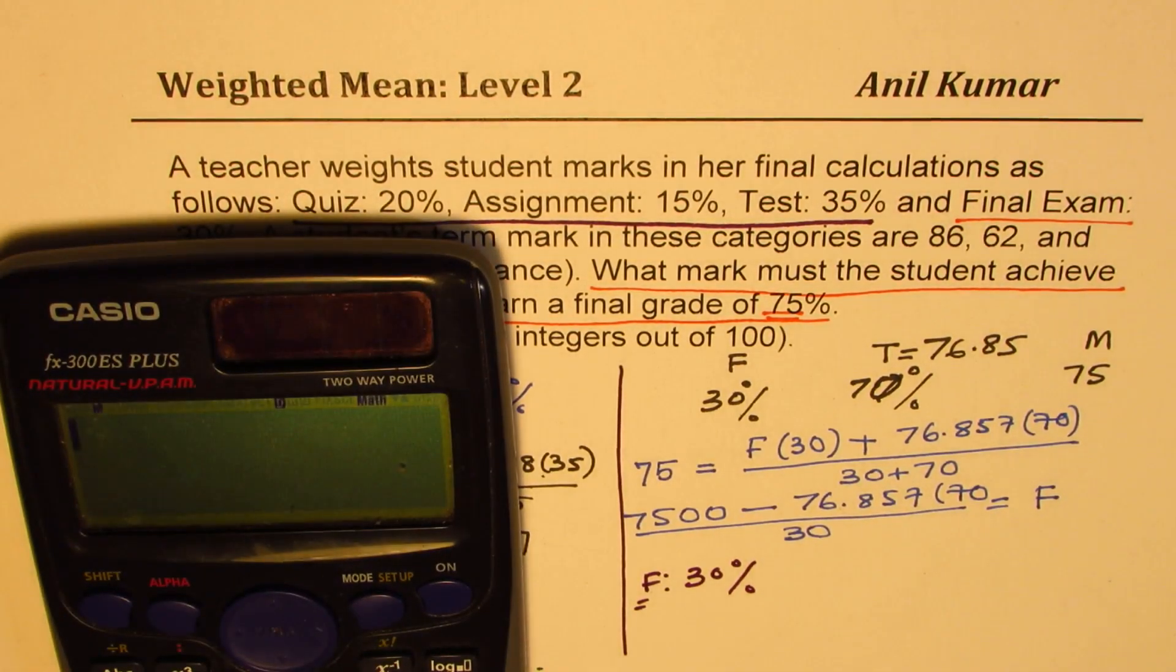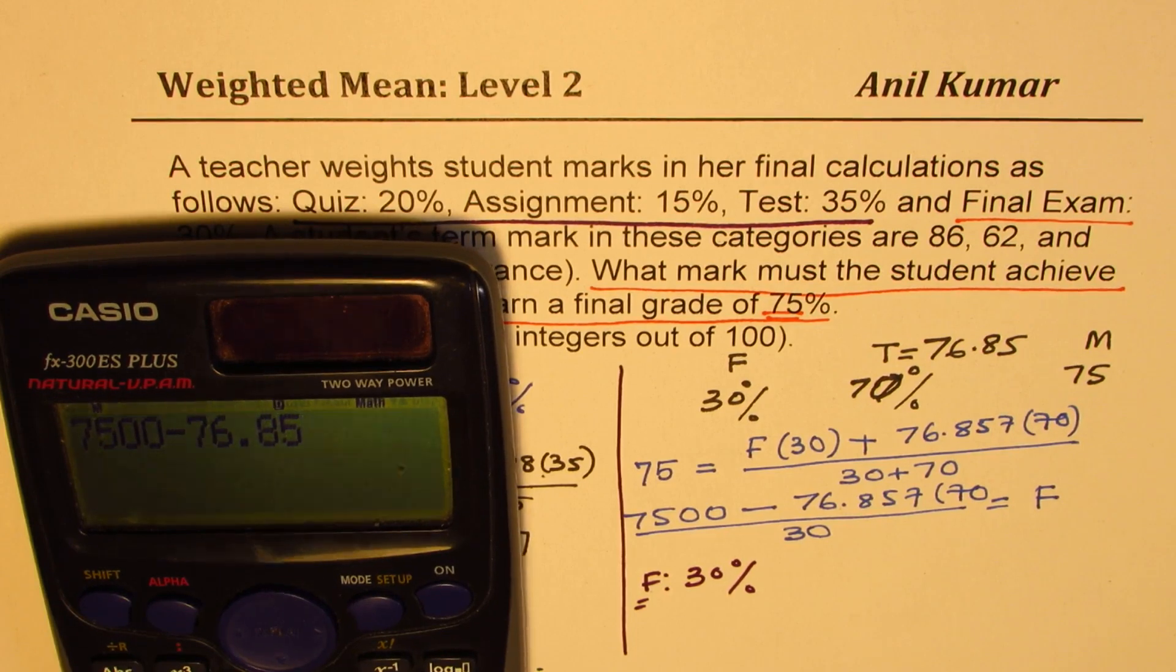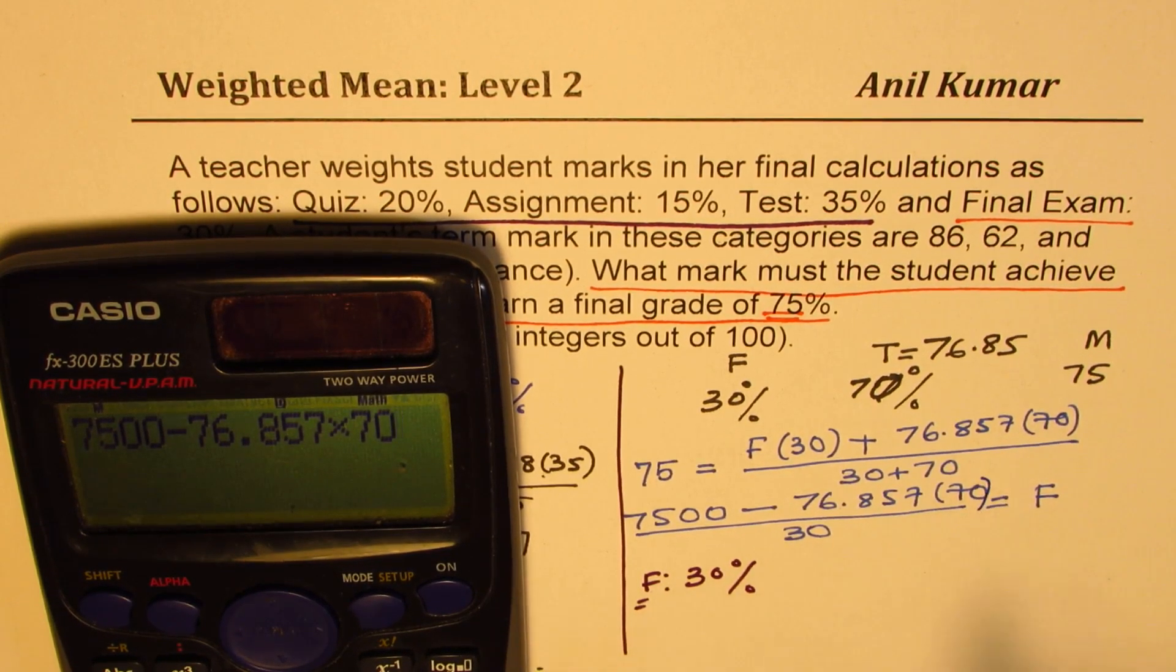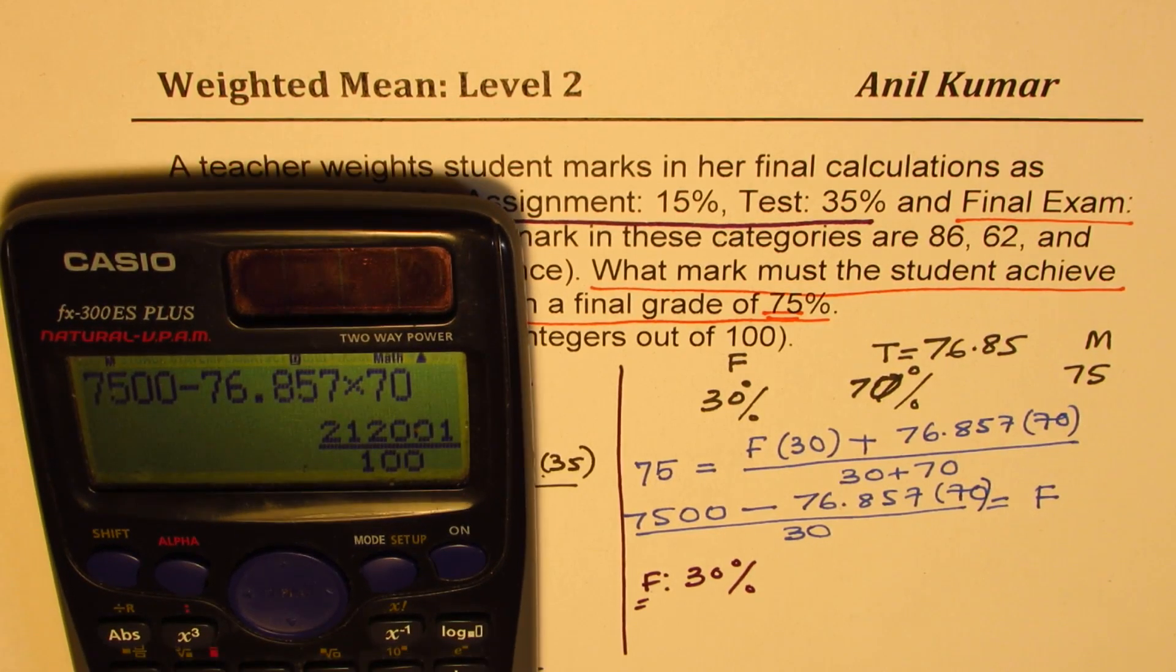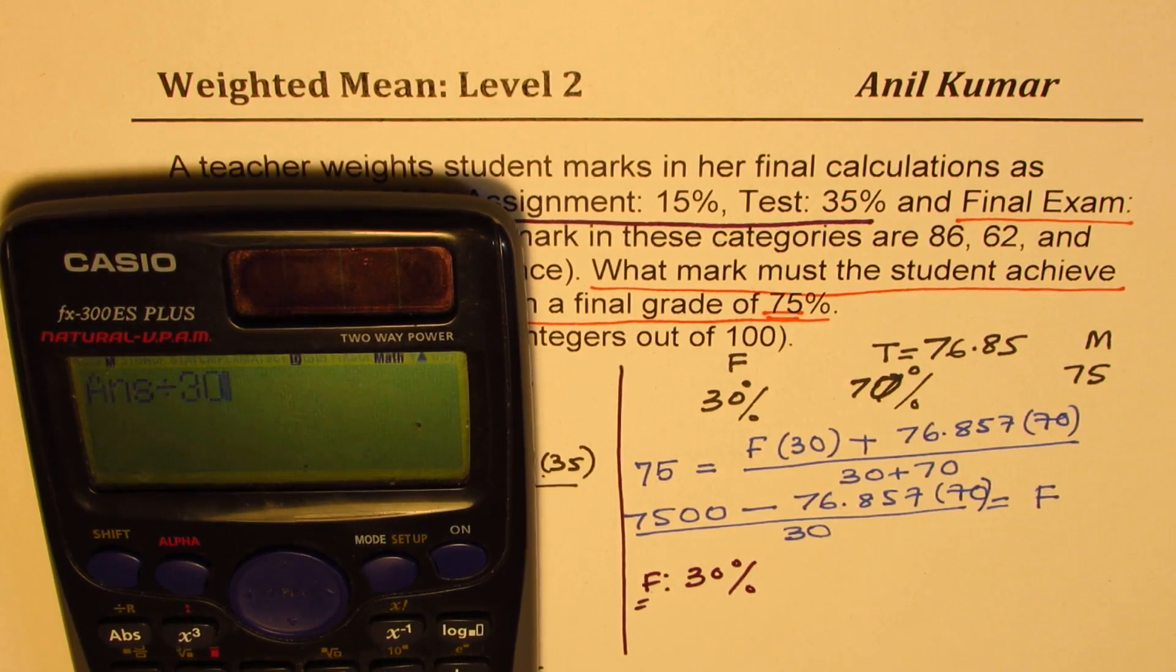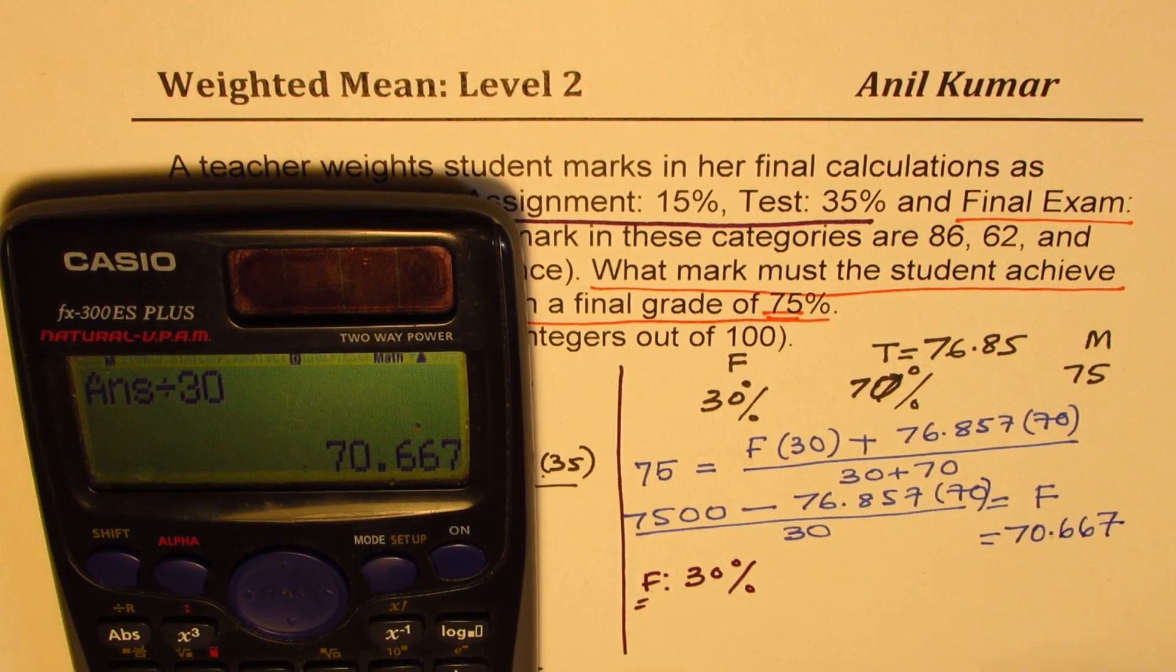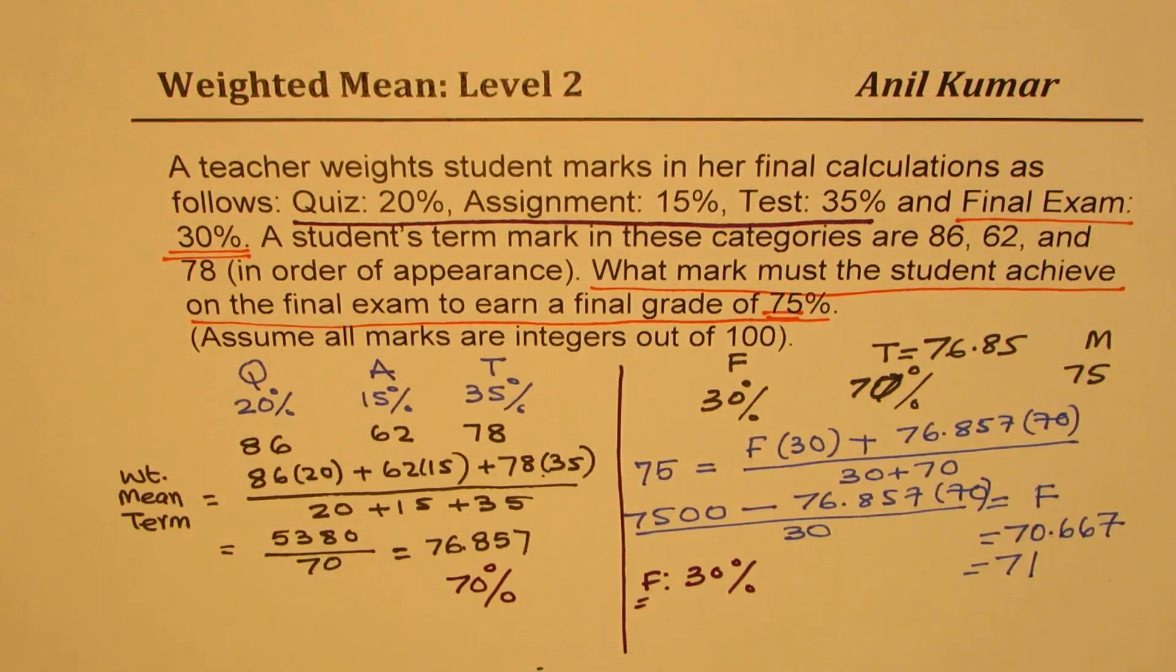So we have here 7500 minus 76.857 times 70, right? And then we are going to divide this by 30 to get the final exam, which is equal to 70.667. So we could round this to 71, so our answer is 71.